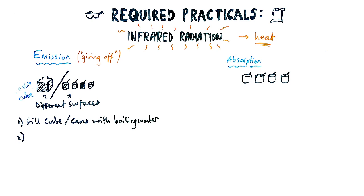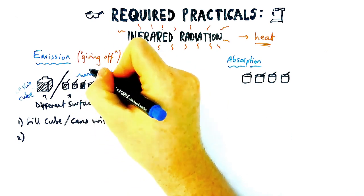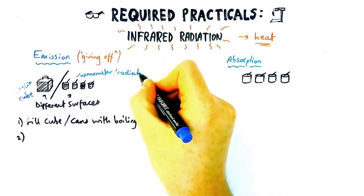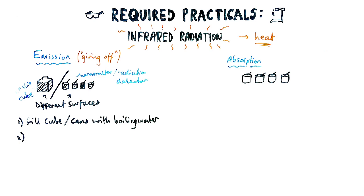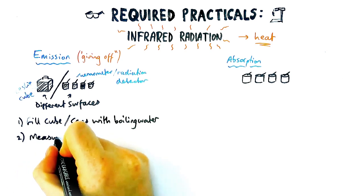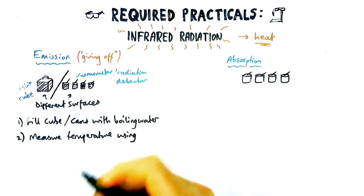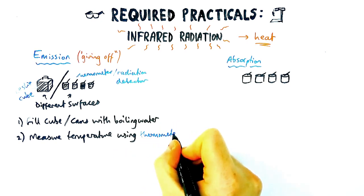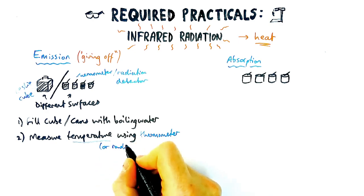How do we measure the infrared radiation? There are two ways. The easy way is using a thermometer, because a thermometer measures temperature, which can be an indicator of the heat released. The second way is using a radiation detector. Usually in a question, they'll give you a diagram to tell you which one to use. So we're going to measure the temperature using a thermometer, or the radiation using the radiation detector.